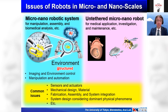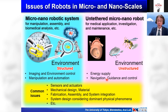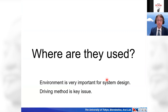Common issues include sensors, actuators, mechanical design, material, fabrication, assembly, and system integration. System design considering dominant physical phenomena is very important. For micro/nanorobotic systems, the environment is structured, so imaging and environment control become more important. For untethered micro/nanorobots, the environment is unstructured, so energy supply, navigation, guidance, and control are more important. The driving method is the key issue.